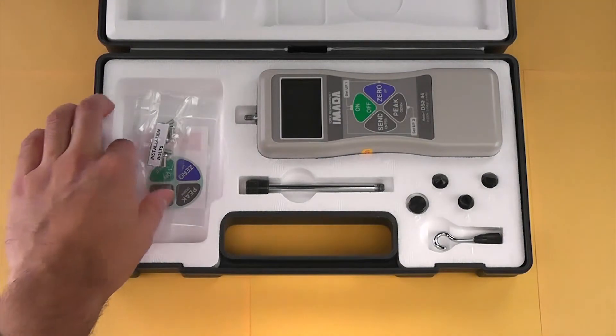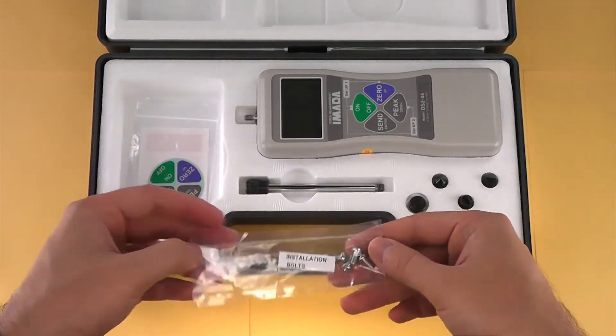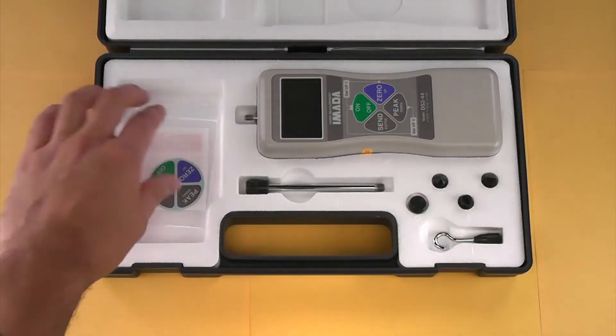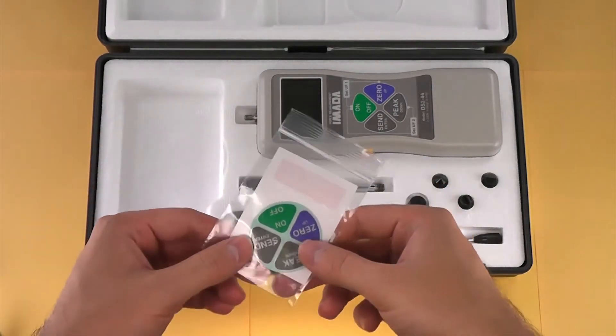The installation bolts for the gauge enable the gauge to be mounted to a test stand. This is the reverse display sticker.